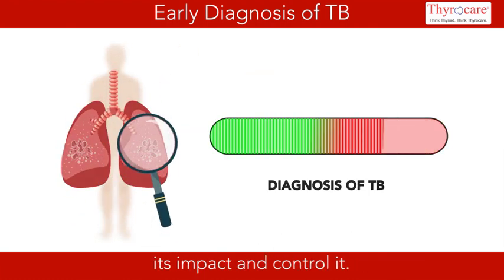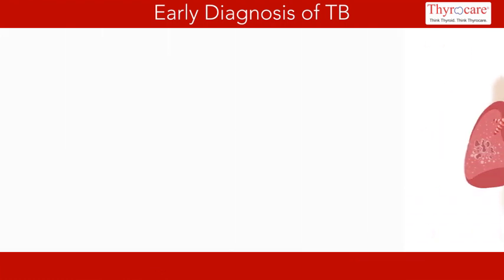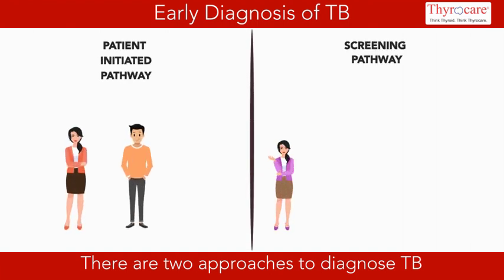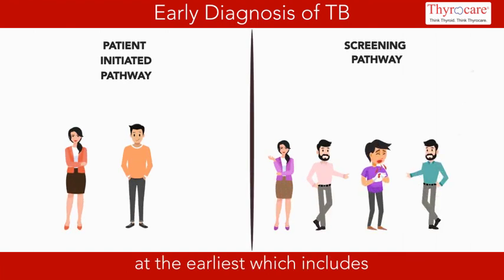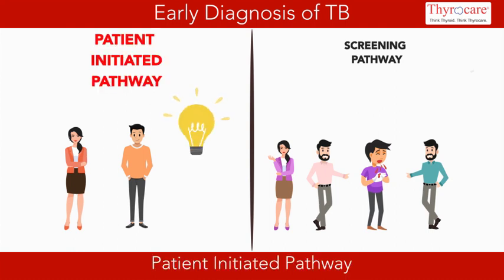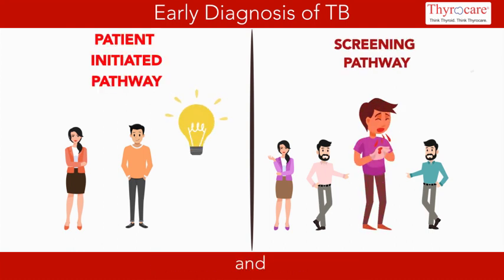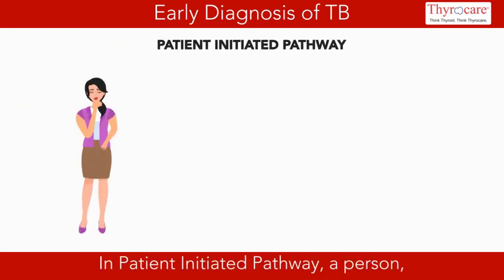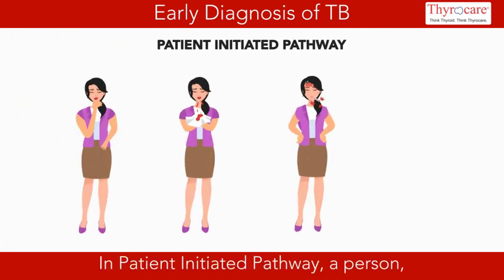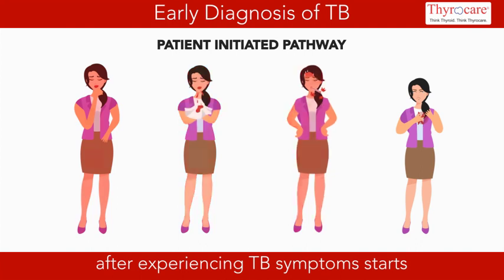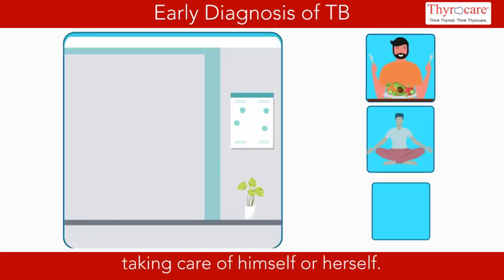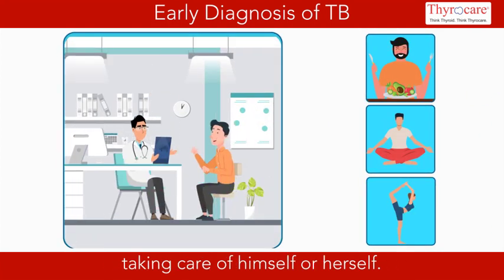There are two approaches to diagnose TB at the earliest, which include the patient-initiated pathway and the screening pathway. In the patient-initiated pathway, a person, after experiencing TB symptoms, starts taking care of himself or herself.